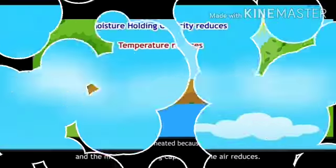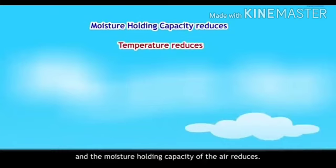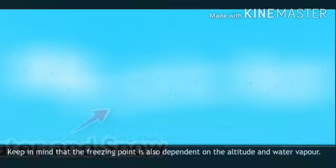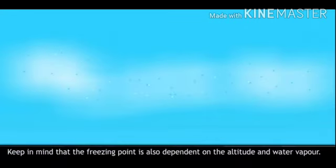Land and water get heated because of the heat of the sun. Hot air rises up and becomes less dense. As it goes higher, the temperature of the air reduces and the moisture-holding capacity of the air also reduces. Relative humidity keeps increasing, and the water vapor in the atmosphere turns into water and snow. This is the dew point level of that air. The level of condensation is determined by the water vapor in the air. Keep in mind that the freezing point is also dependent on altitude and water vapor.